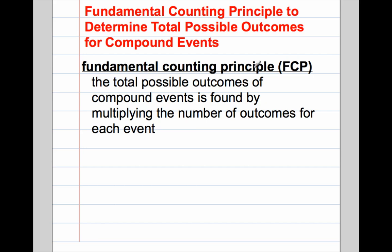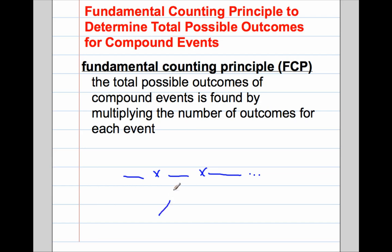The Fundamental Counting Principle says that the total possible outcomes of compound events is found by multiplying the number of outcomes for each event. So if I have three different events, I'm going to see how many outcomes I have for the first event, multiply that by how many outcomes I have for the second event, multiply that by how many outcomes I have for the third event. If I had more events, I'd keep doing the same exact thing, and that would give me the total possible outcomes.